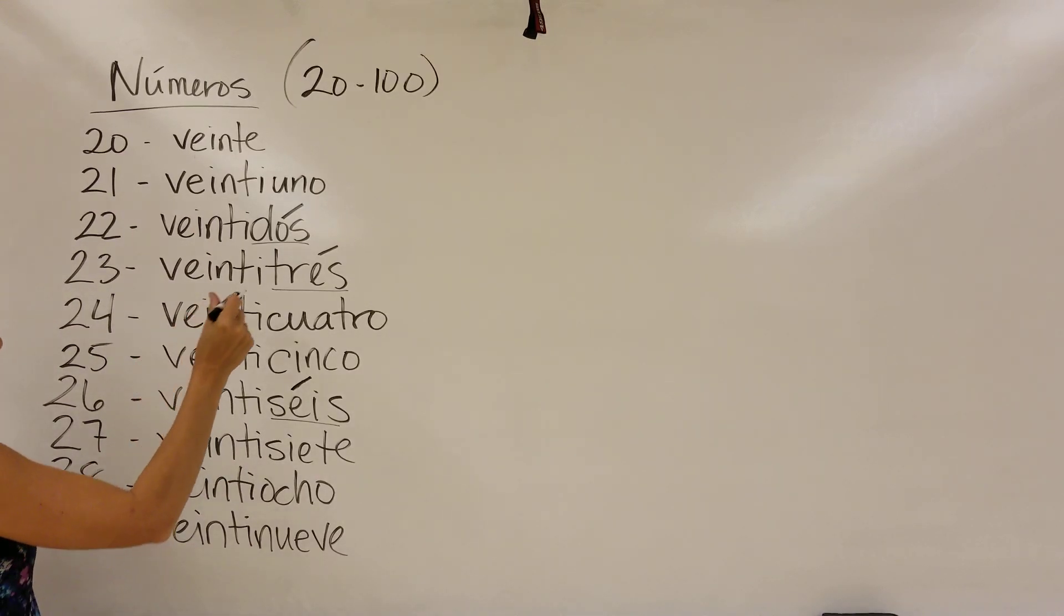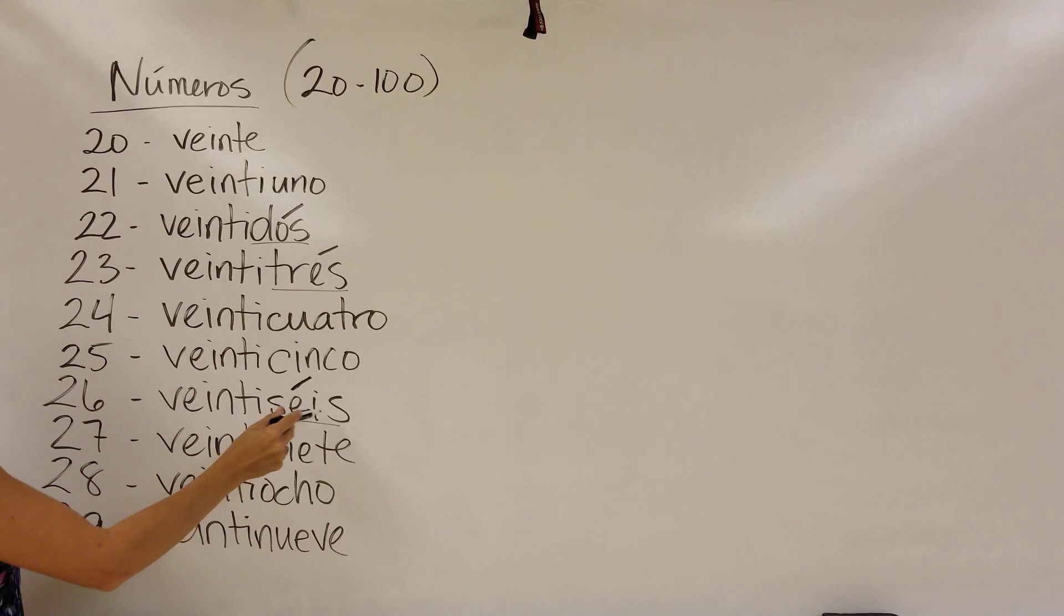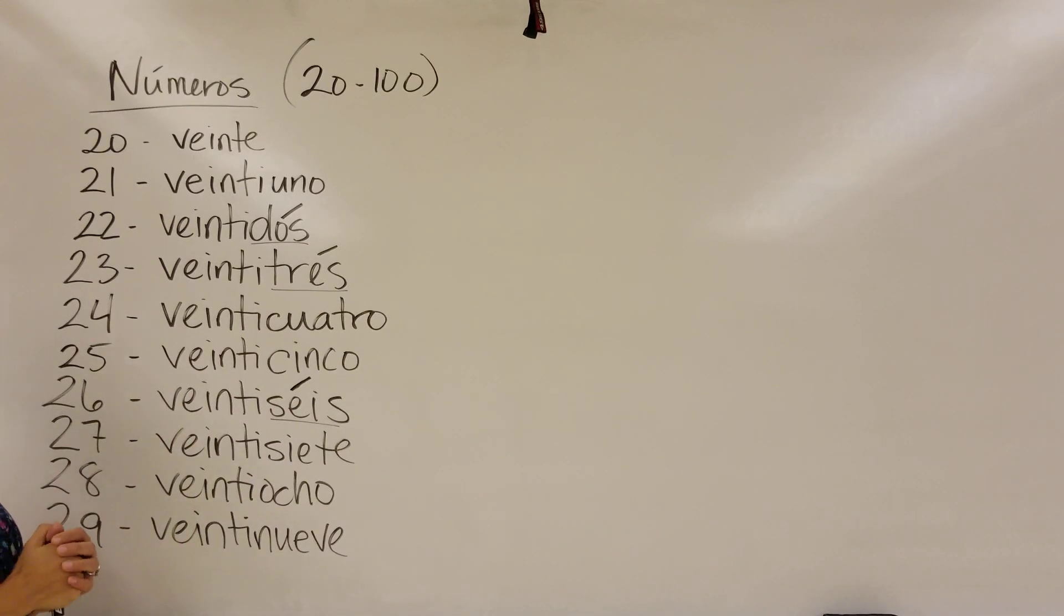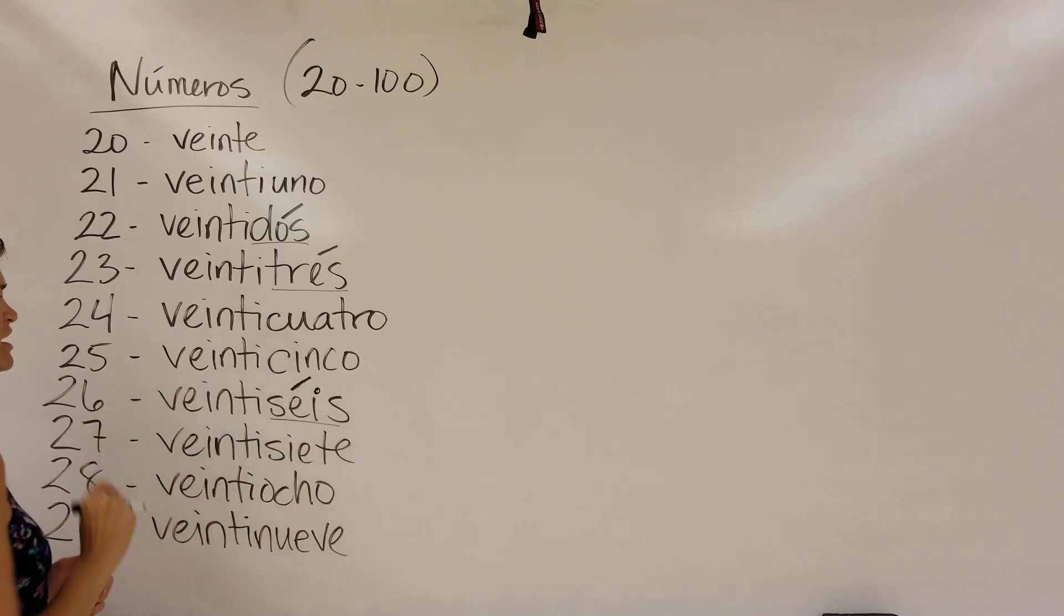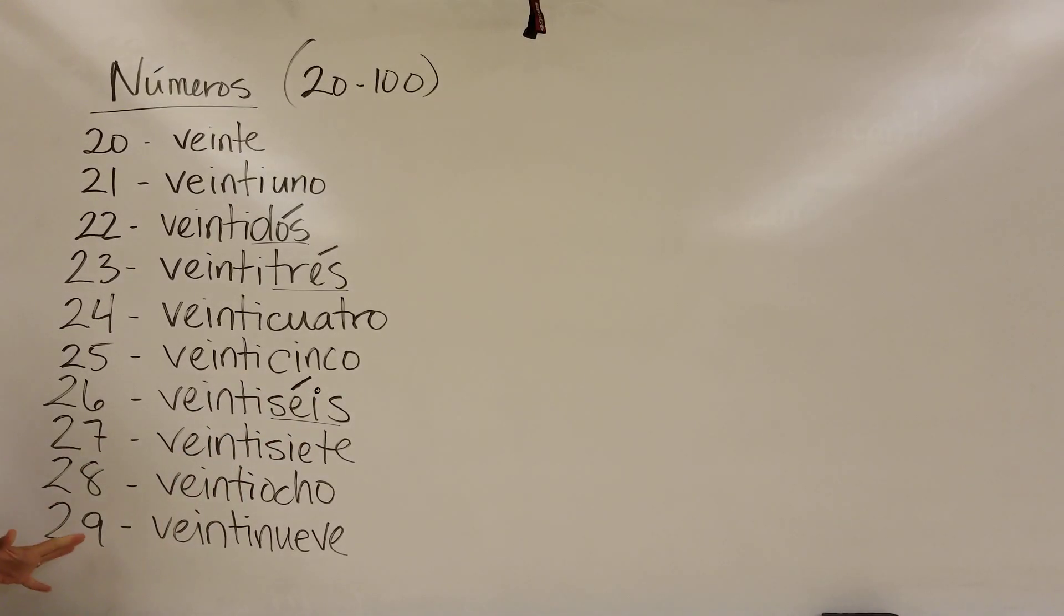But the easiest way to remember is that if it ends with an S, and if it's in the 20s and it ends with an S, you need to put an accent on that vowel there. But this one's on the E, and the I has a dot. All right, so that's the 20s.